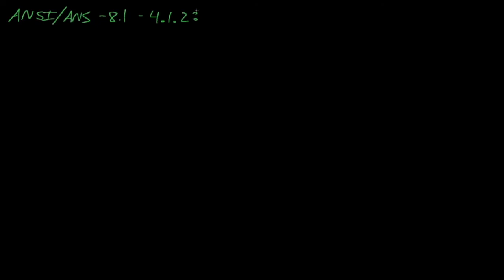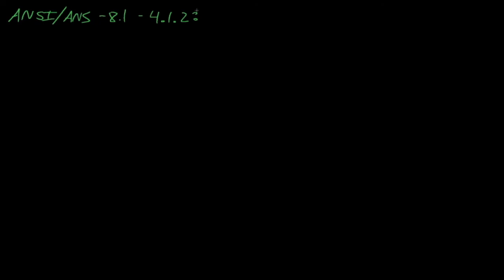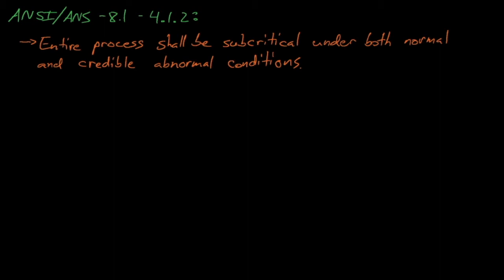Both the ANSI ANS 8.1 Section 4.1.2 standard and the ANSI ANS 8.19 Section 7.1 standard state that before a new operation with fissionable material is begun or before an existing operation is changed, it shall be determined and documented that the entire process will be subcritical under both normal and credible abnormal conditions. Today, we'll discuss how process analysis is used to quantify what credible abnormal conditions are.